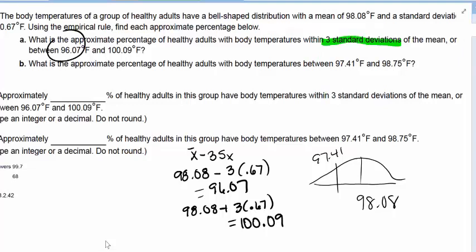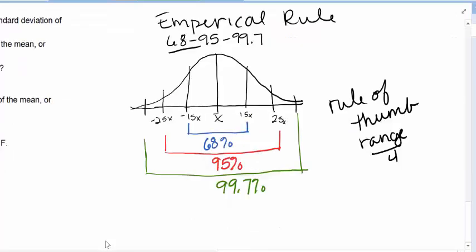Now we need the percent. What percentage of healthy adults will be within 96.07 and 100.09? And we've verified that it's three standard deviations away. Well, three standard deviations away, it says, use the empirical rule. So three standard deviations away, there's my percentage.